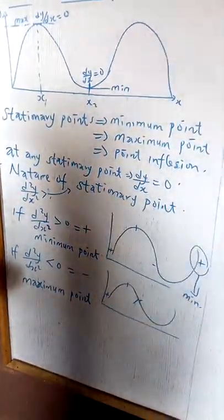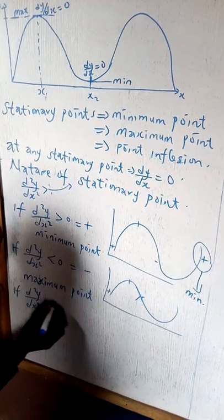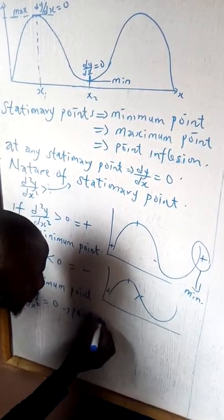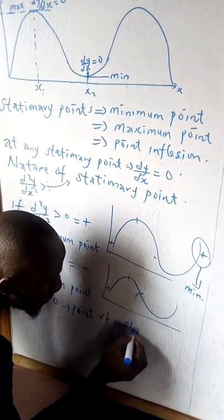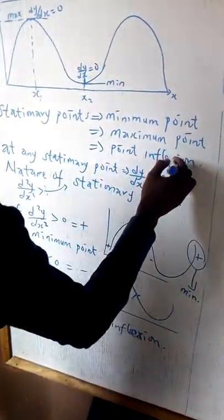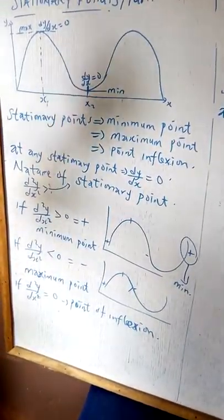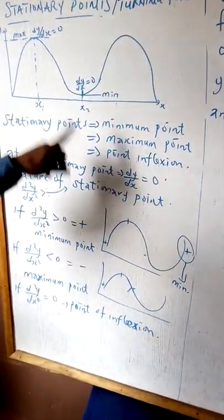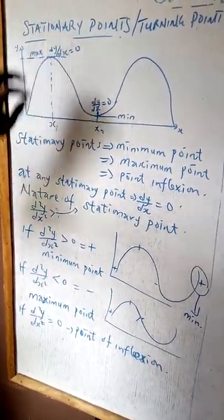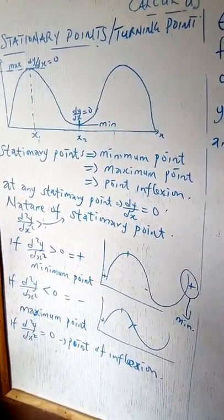If the second derivative d²y/dx² is equal to zero at the stationary point, then we have a point of inflection — neither minimum nor maximum. So the three types of stationary points are: minimum point, maximum point, and point of inflection.